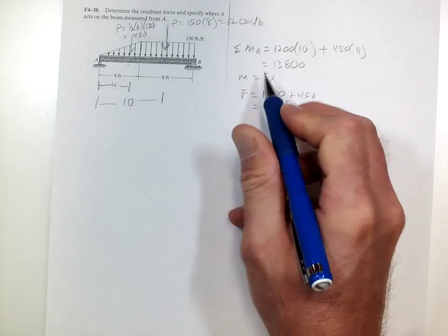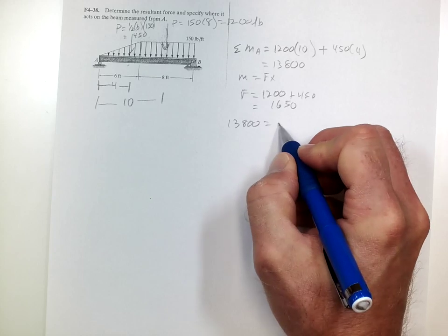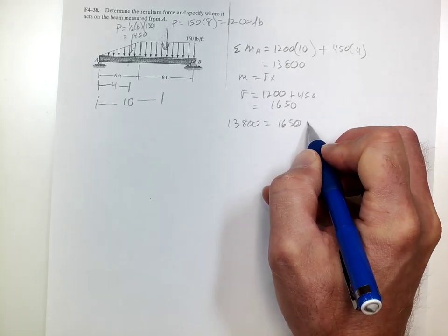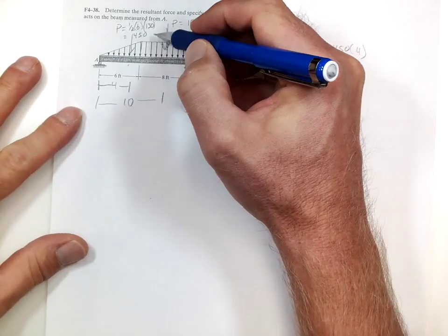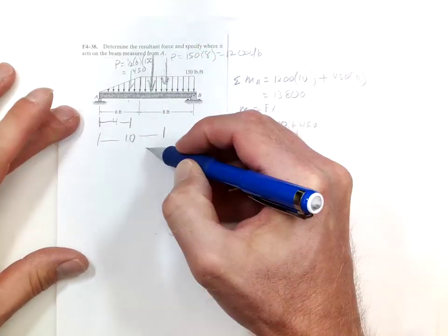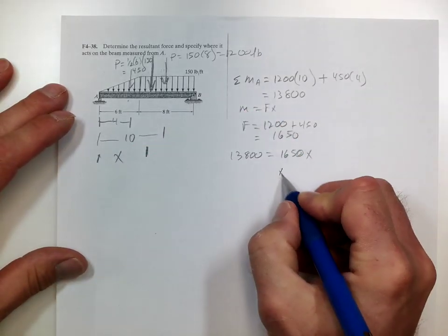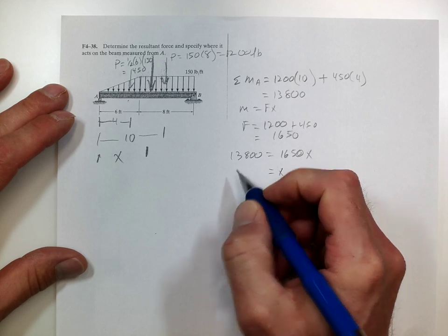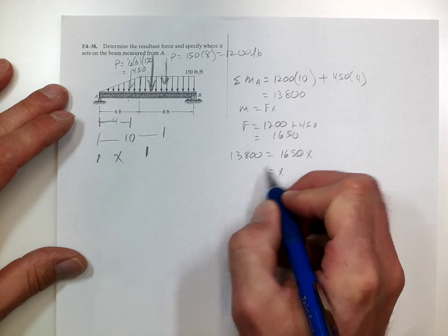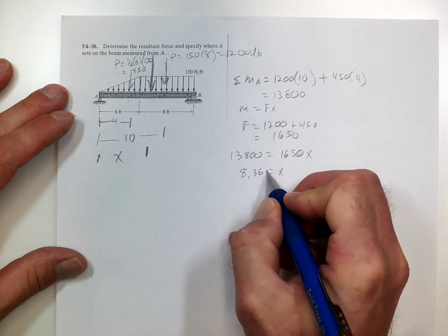The moment is 13,800 and the force is 1,650, and we're going to find the distance x for that total force on the beam. So x is equal to 13,800 divided by 1,650, and that is at 8.36 feet.